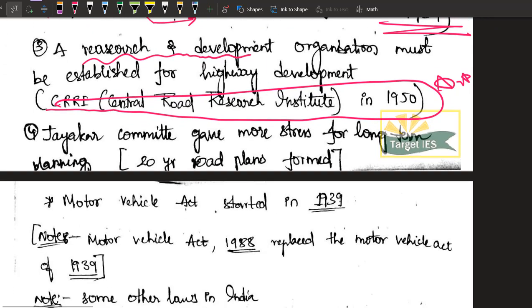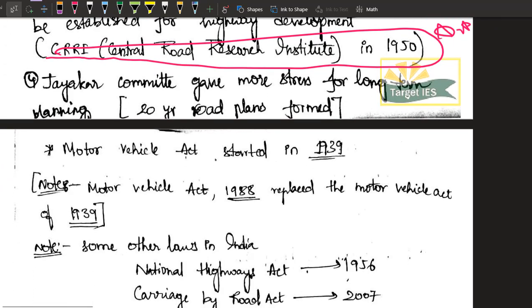The Jayakar Committee also gave long-term planning measures, saying we have to focus for future generations. That's why 20-year road plans were formed. We have three such plans: the first was the Nagpur plan, the second was the Bombay plan, and the third was the Lucknow plan.